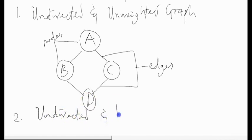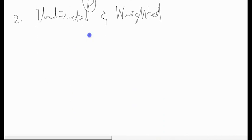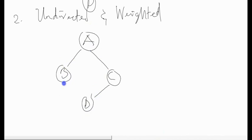The next example is undirected and weighted. We can move from A to B or D to C to B. For example, we have nodes A, B, C, and D on the board with weight values: the edge between A and C is 5, the edge between A and B is 4, and the edge between B and D is 7. Because there are values placed on the edges, it is now a weighted graph.